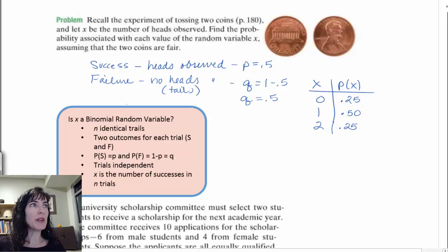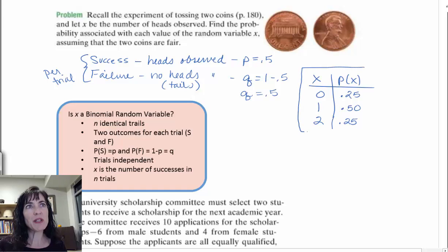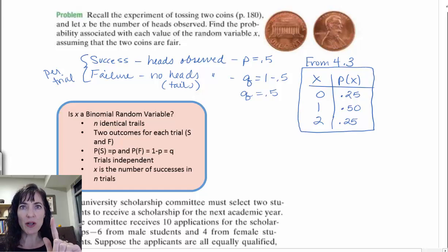So what we want to think about in this one, we're talking per trial. So we need to make that clear per trial. And I had us go through this because we're going to use it in a few minutes to compare to, but this is from 4.3. We found those probabilities on two coin flips. So when we're thinking about a single trial, we are talking about, is x a binomial random variable?